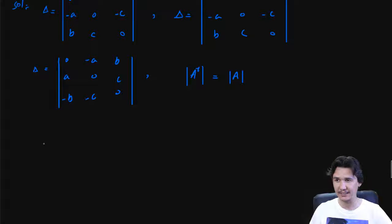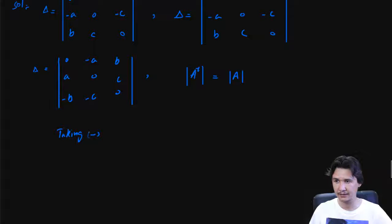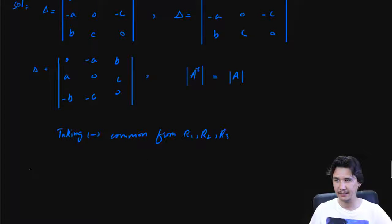Now we are going to take minus one as a common factor from row one, row two, and row three — taking the minus sign common from all three rows.